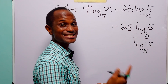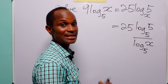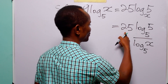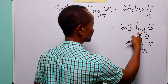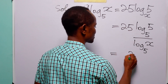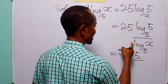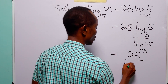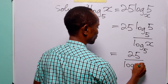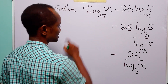Log to base anything of the same thing is equal to 1. So in the numerator we have 25 times 1, which is equal to 25, divided by log to base 5 of x.